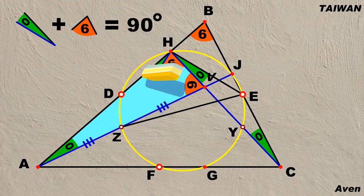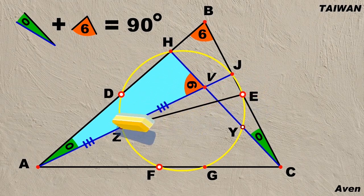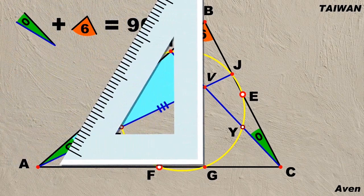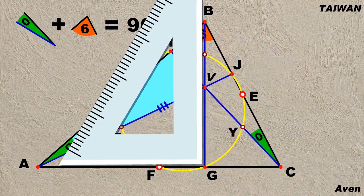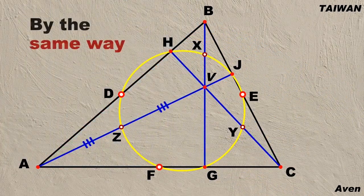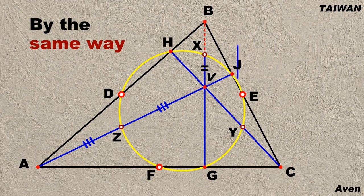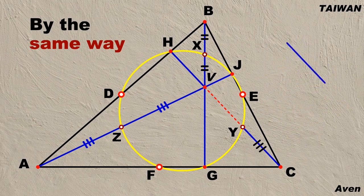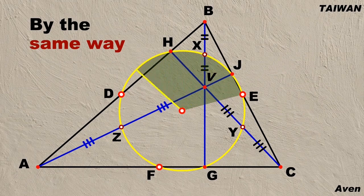After erasing some line segments, the figure looks clear again. Now we draw the altitude BG. By the same method above, we prove that BX equals XV and VY is equal to YC. We have therefore proved the existence of the nine-point circle.